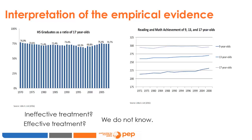There are two ways to interpret this empirical evidence: a pessimistic way and an optimistic way. The pessimistic approach highlights that there has been no improvement in high school graduation rates or standardized test scores, even though the policy recommendations were implemented — suggesting the policies were ineffective and the treatments did not work. The optimistic approach, on the other hand, says it was a great choice to follow the recommendations, arguing that without the investment, we would have observed a steep downward slope, and the treatments stabilized outcomes rather than letting them deteriorate.